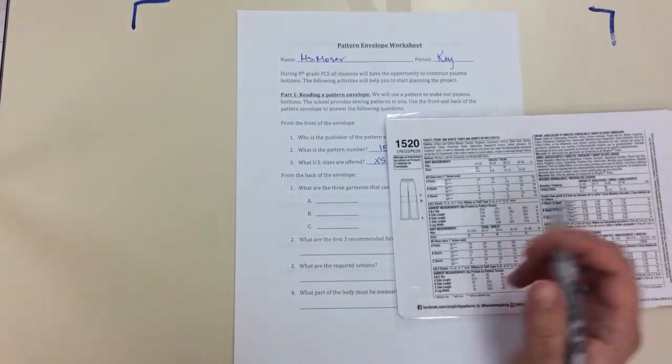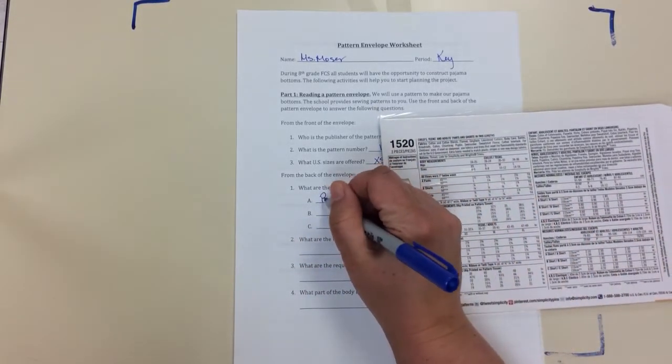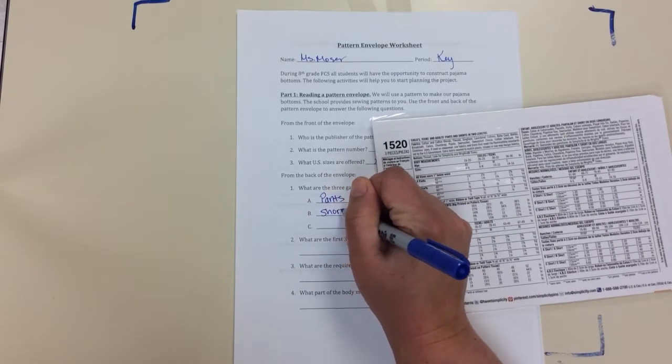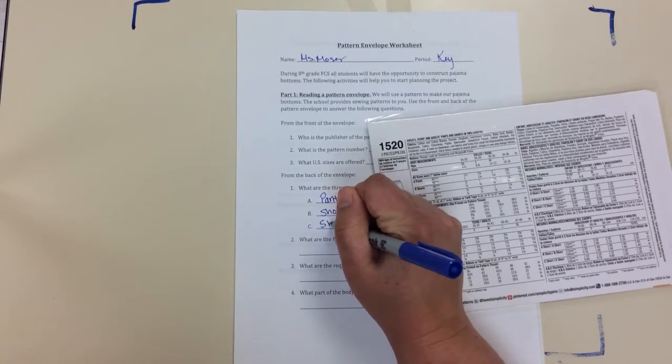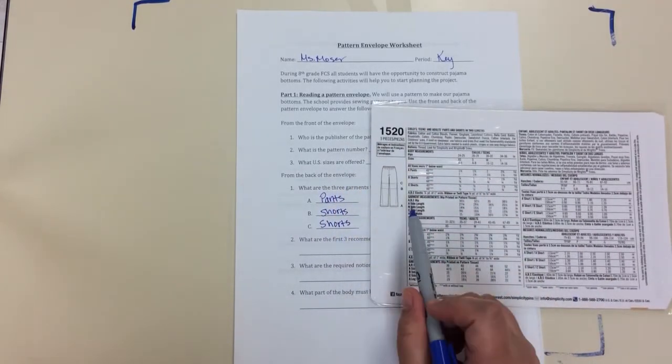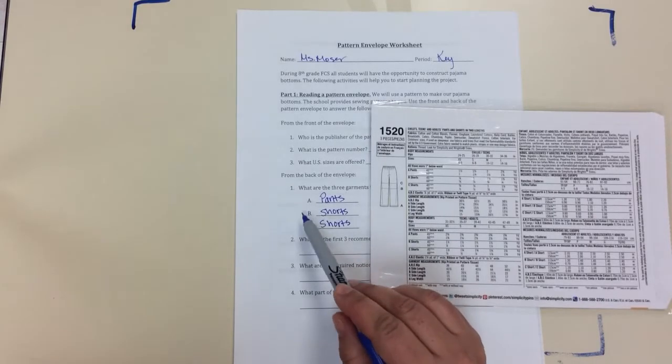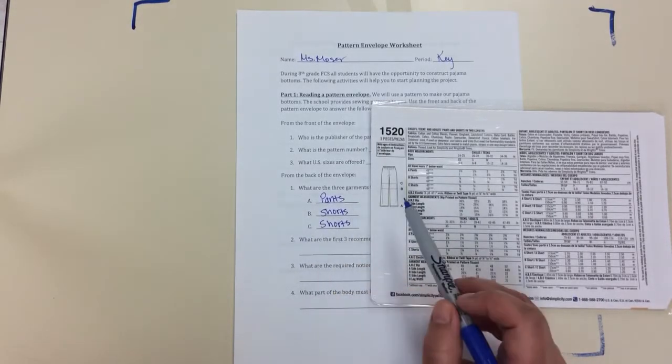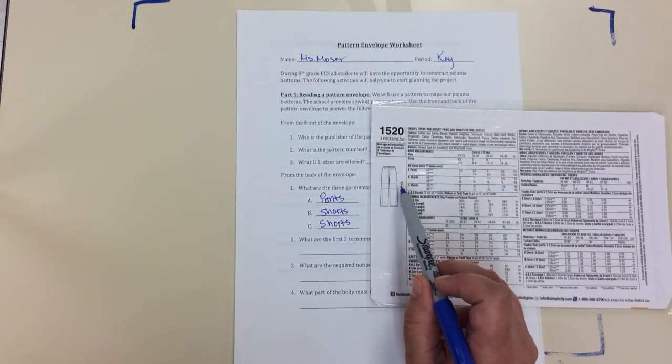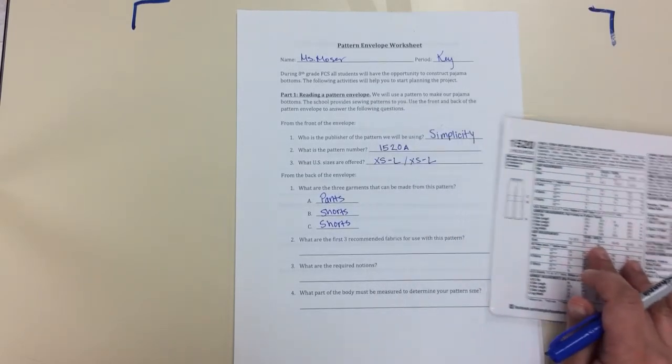So those are the garments that this pattern will make - A is pants, shorts for B, and shorts for C. You might want to put a little star here next to the one you're thinking you'd like to make. These are full-length pants, B is for like the basketball length shorts, and C is for the shorter shorts.